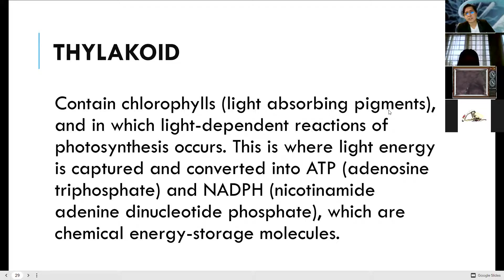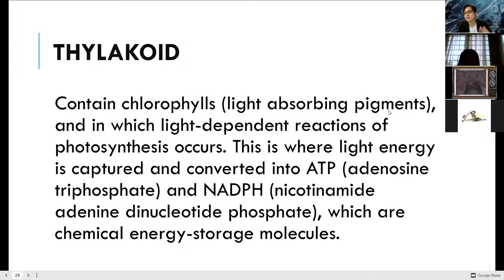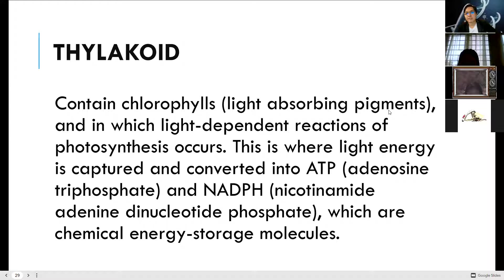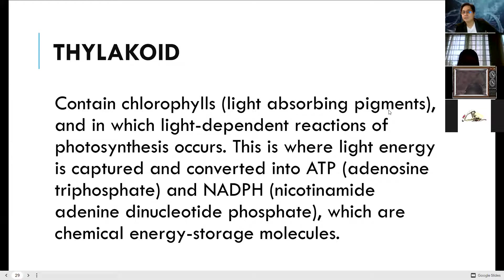ATP is the energy currency of the cell — this is the currency that our cells are actually using. ATP, adenosine triphosphate, has three phosphate groups in one adenosine molecule. Because it has three phosphates, we are usually using the phosphate group as energy.